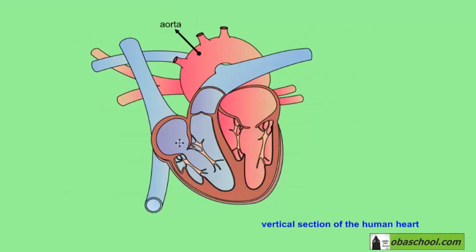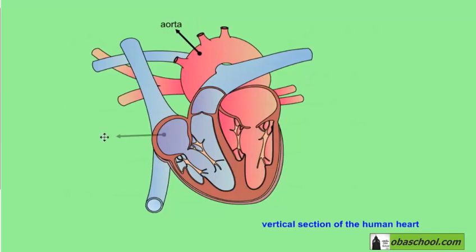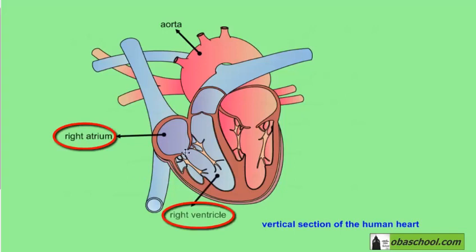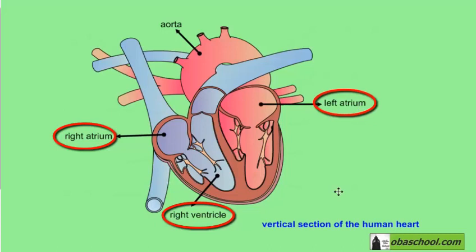The heart has four chambers. This is the right atrium. This is the right ventricle. It is important to notice that these are right and not left because here the heart is inverted — the heart always points left from downwards. And here we have the left atrium and the left ventricle.